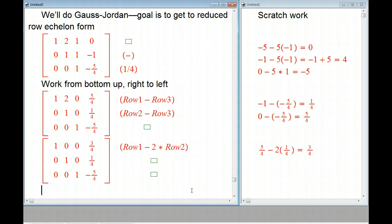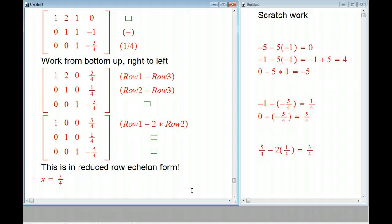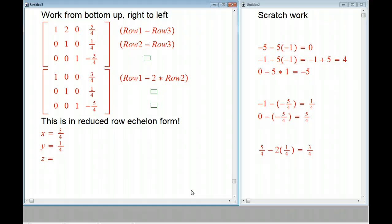This is in reduced row echelon form. And why is this so nice? It's because the answer is staring us in the face. The first equation says x equals three-fourths. The second equation says y equals one-fourth. And the third equation says z equals minus five-fourths. And so we're done. There are more complicated examples where you get many answers, but this is still a really great way to deal with those in a very systematic way and not to get confused by them. But this is a good place to stop this one.